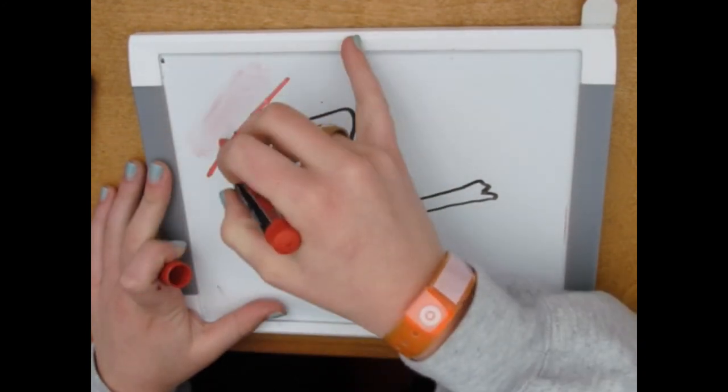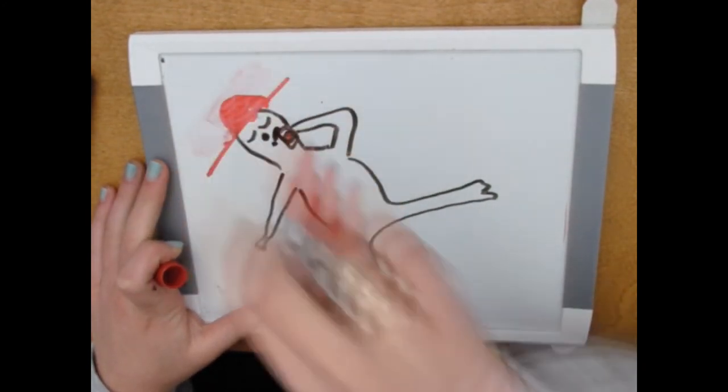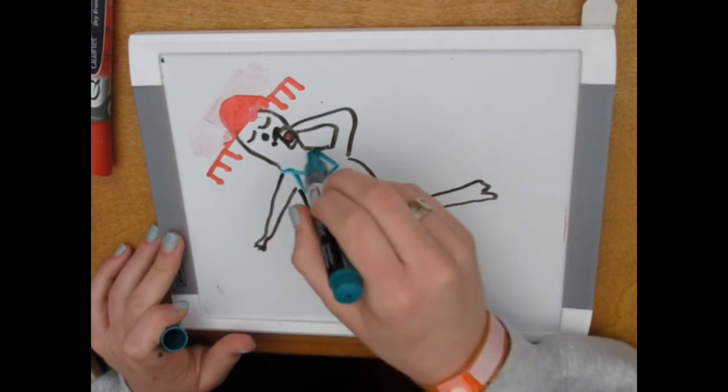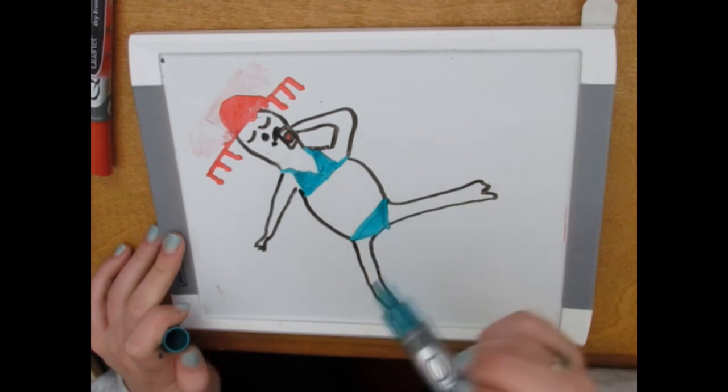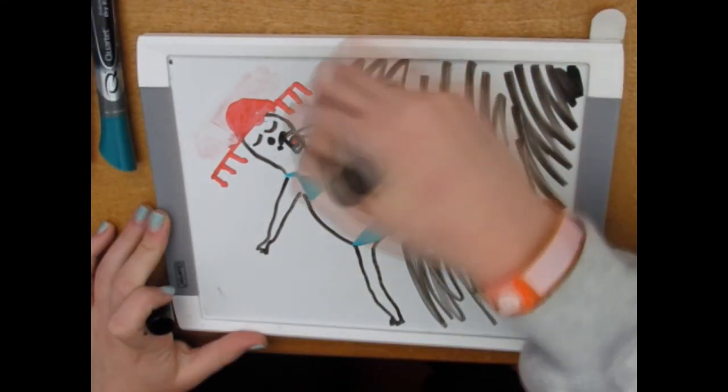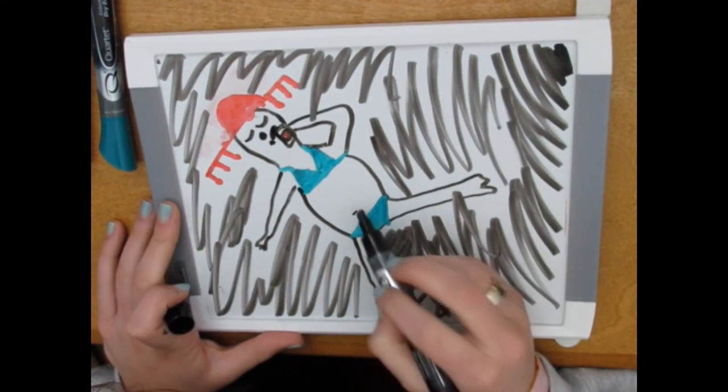And then I couldn't remember what a sombrero looked like and then I drew his bikini which was slightly revealing and inappropriate. And then I drew space which was the easiest part of this drawing.